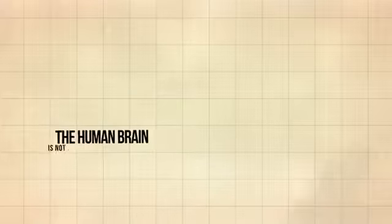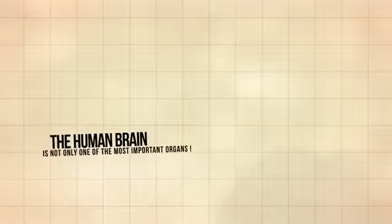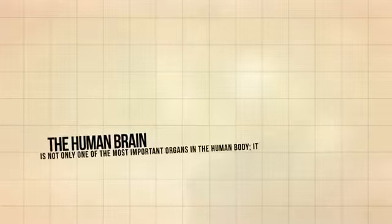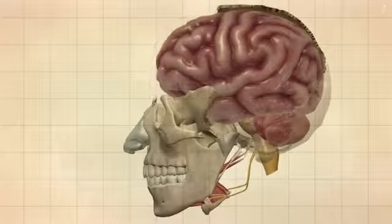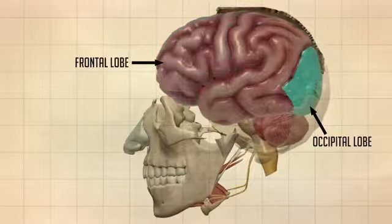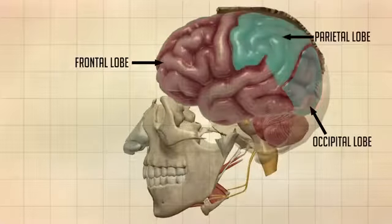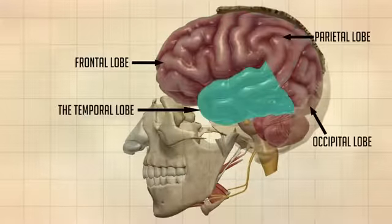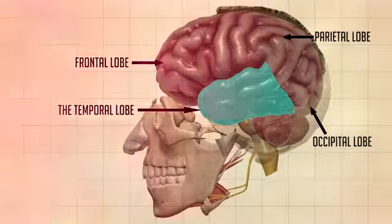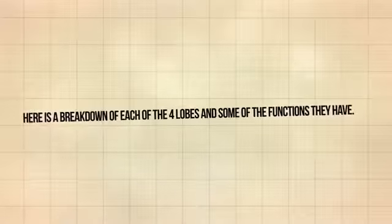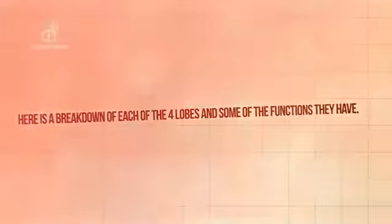The human brain is not only one of the most important organs in the human body, it is also the most complex. The brain is divided into four major sections known as lobes: the frontal lobe, the occipital lobe, the parietal lobe, and the temporal lobe, which have different locations and functions that support the responses and actions of the human body.